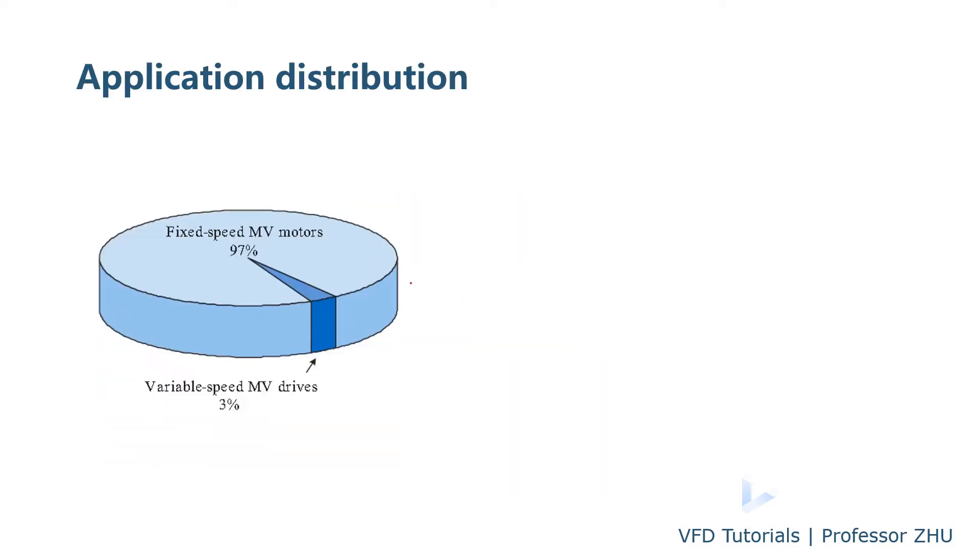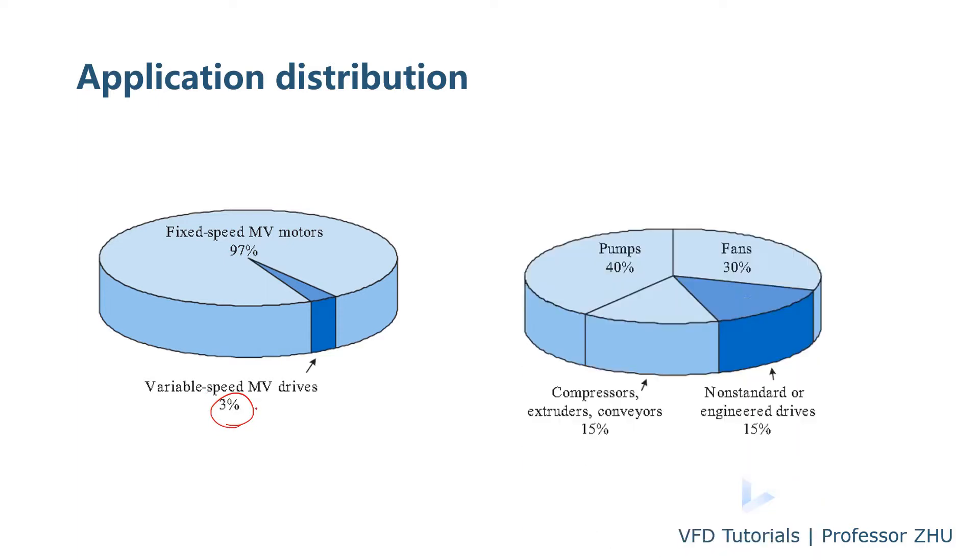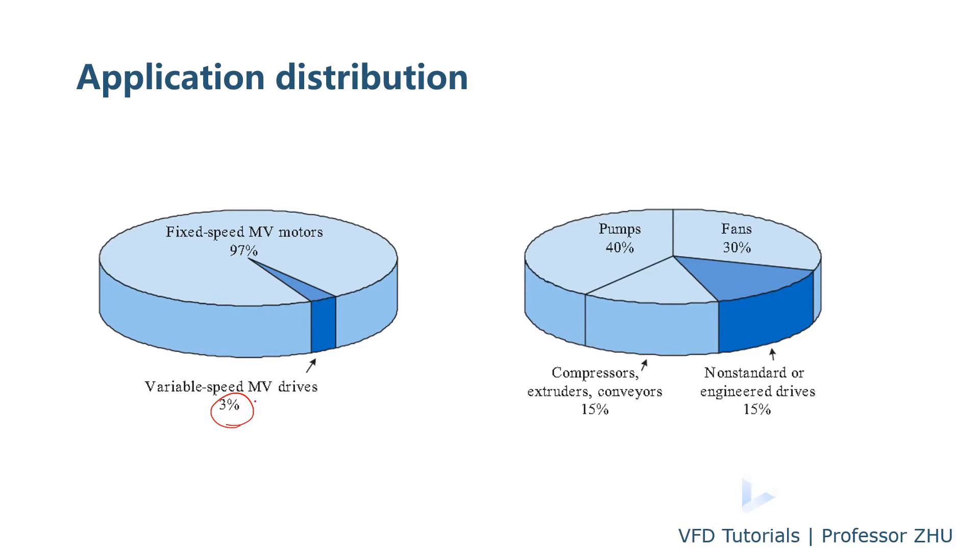For the medium voltage motor, the majority is fixed speed. Only about 3% is driven by the variable speed drive. And for those driven by the VFD, majority of the load type is pump, fan, and compressor. And a very few, a small portion, the load is what we call the non-standard or engineered drive like a roller mill for the steel industry or some test bench.